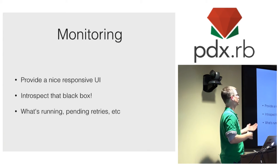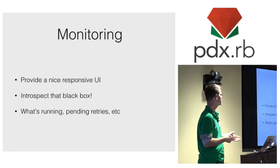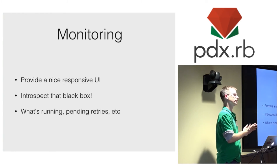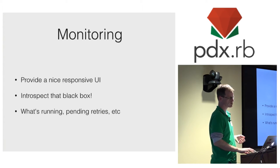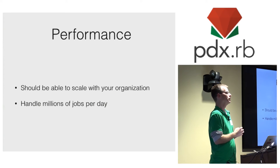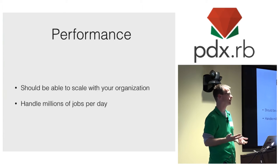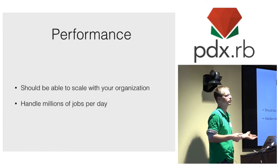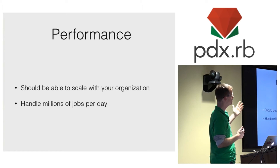The third most important thing: your background job system is a black box, and you need some visibility into it. You'll want a user interface where you can introspect various aspects — what's running, the errors caught, what's pending, scheduled jobs, all that. The last most important trait is performance. If your organization runs 1,000 jobs a day, performance probably isn't that important. But if you're running 10,000 jobs a day today and may be running a million tomorrow and 100 million six months from now, you want a system that can scale with that volume.